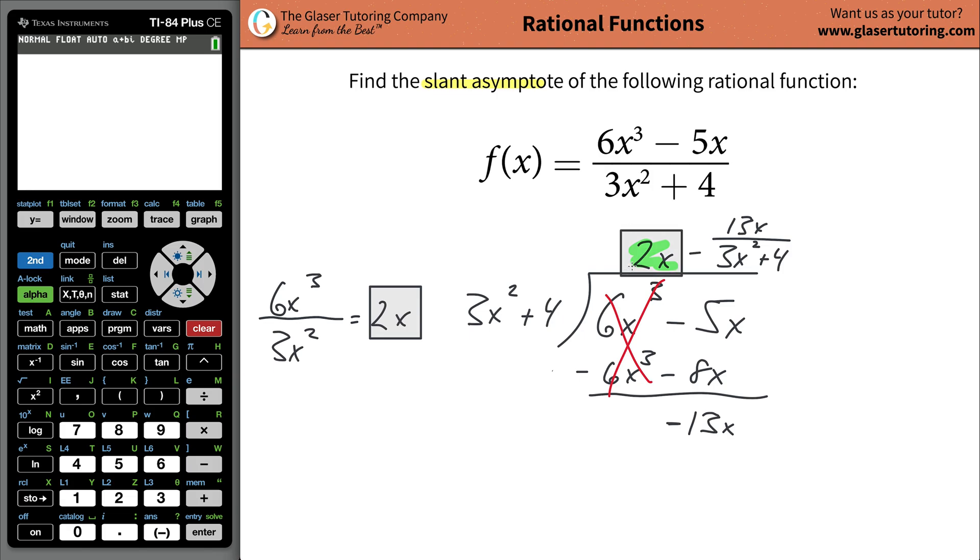And guess what this is? That's it. That's the slant asymptote. That's it. Problem over. Now, if you want to see it, though, I would graph the original function at the top.